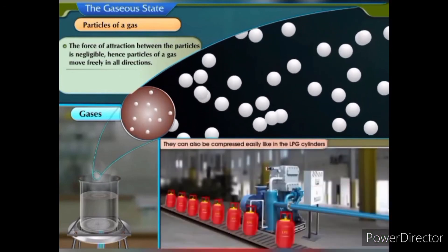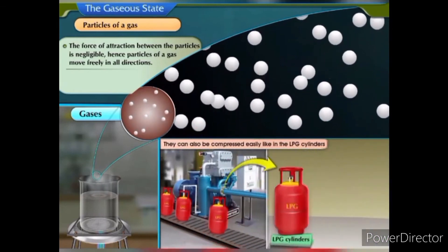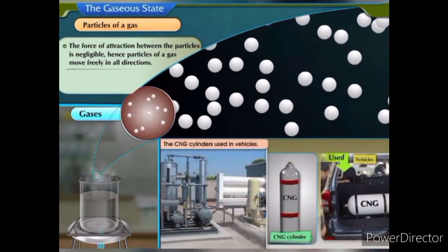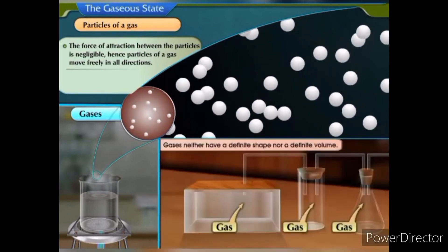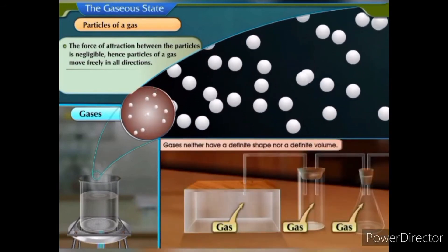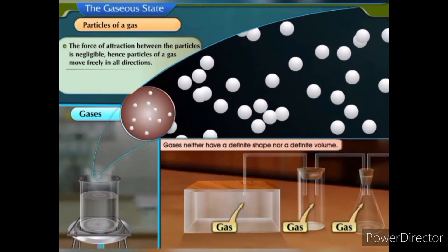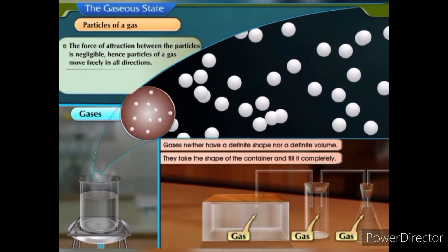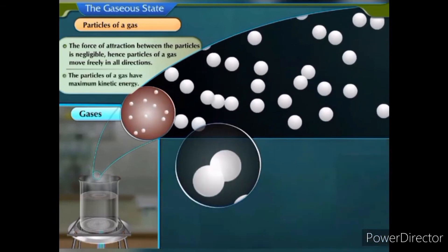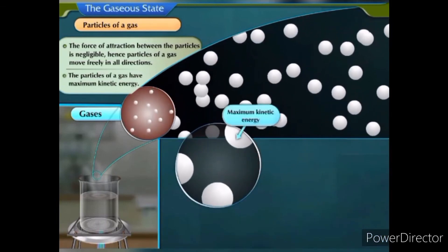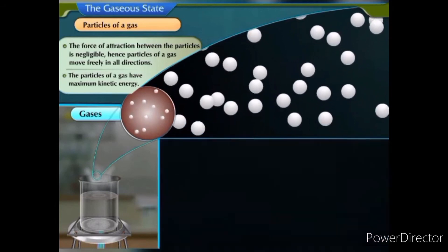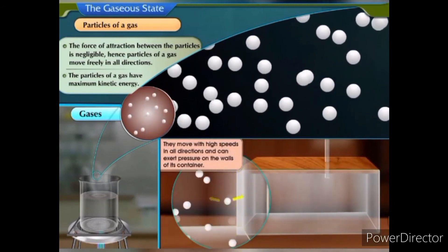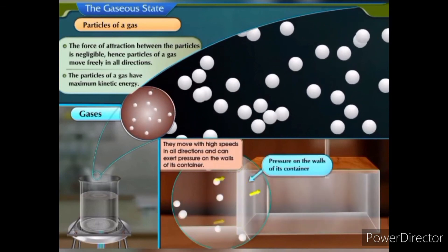Gases can also be compressed easily, like in the LPG cylinders used at home and the CNG cylinders used in vehicles. Gases neither have a definite shape nor a definite volume. They take the shape of the container and fill it completely. The particles of a gas have maximum kinetic energy. They move with high speeds in all directions and can exert pressure on the walls of their container.